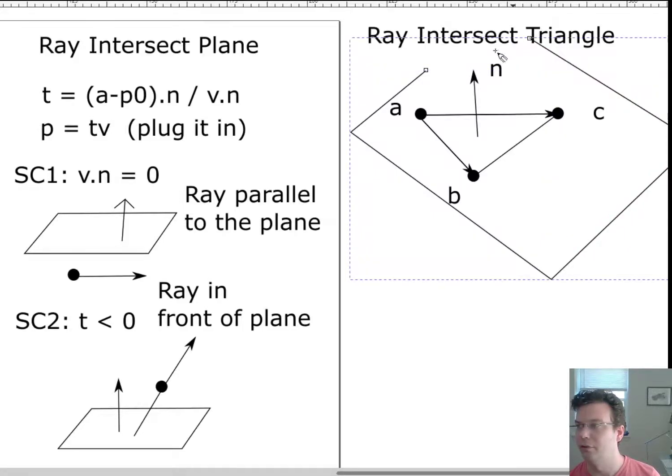We could have a ray that looks like this and maybe the ray does intersect the plane here, and so we'll get a valid solution to the equation.